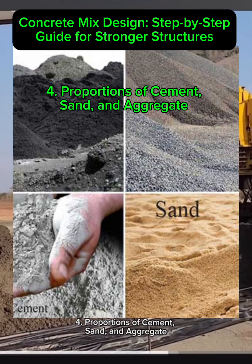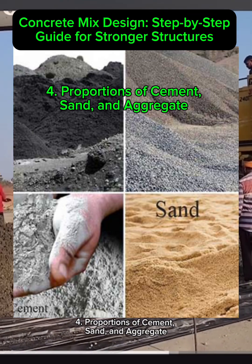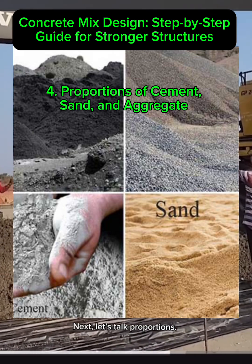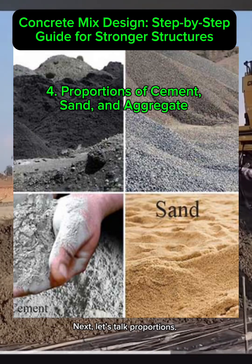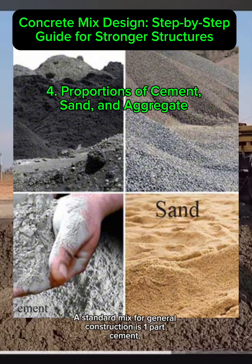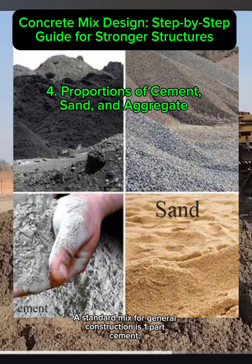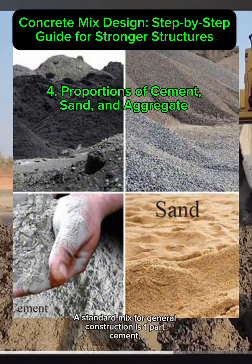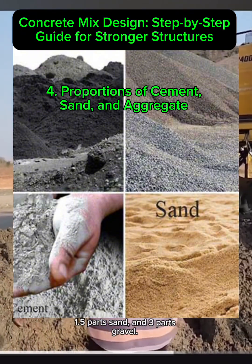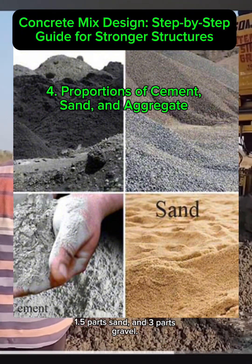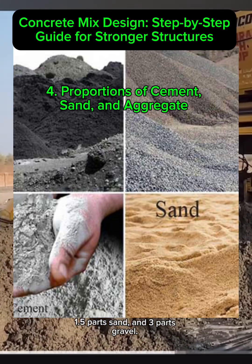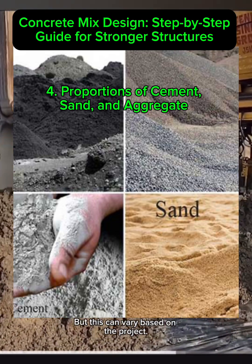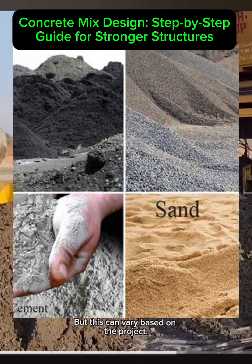Step 4: Proportions of cement, sand, and aggregate. A standard mix for general construction is one part cement, 1.5 parts sand, and three parts gravel. But this can vary based on the project.